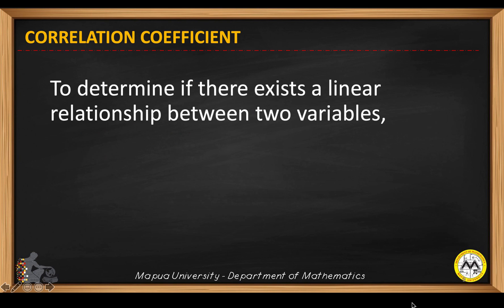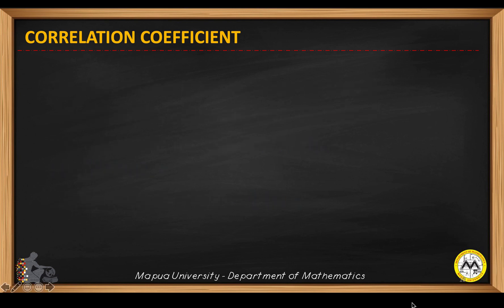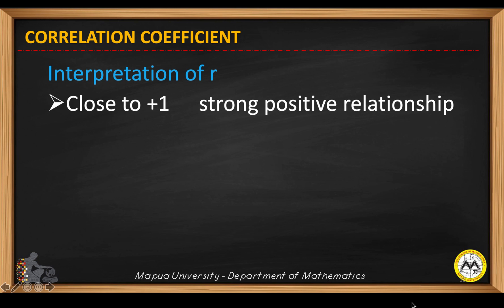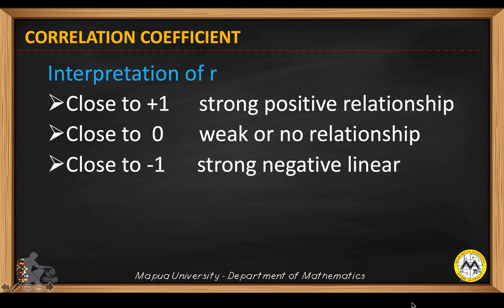To determine if there exists a linear relationship between two variables, we compute for the correlation coefficient r, which ranges from negative one to positive one. If the value of r is close to positive one, then we have a strong positive linear relationship. If it is close to zero, either it is weak or there is no linear relationship. If r is close to negative one, we have a strong negative linear relationship. A positive slope is directed towards the first quadrant, while a slope close to negative one points to the second quadrant.